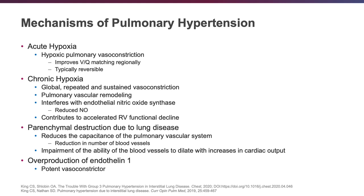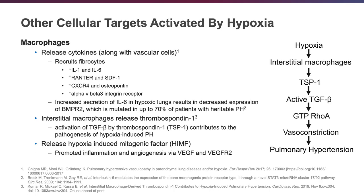Endothelin-1 happens to be a very potent vasoconstrictor. There are other targets that can be activated by hypoxia at the level of the macrophage, resulting in an increase in interleukins and cytokine production. This can augment vasoconstriction and ultimately pulmonary hypertension.